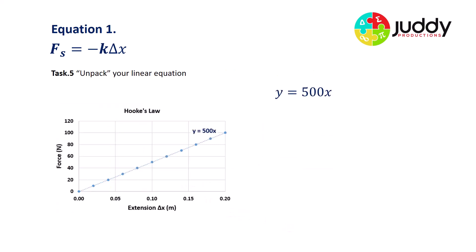Let's now unpack our linear equation. We have an expression at the top of our line of best fit that says Y equals 500 times X. So Y represents the force. You can see on the Y axis we've got a label of force. Likewise, the X variable is represented by extension. That's what we've labeled our horizontal axis on the graph. So at the moment we have an expression that says force equals 500 times extension.